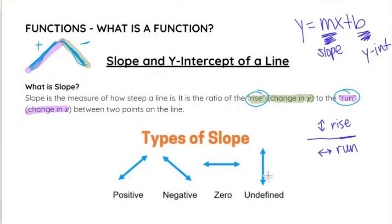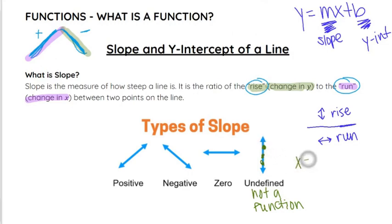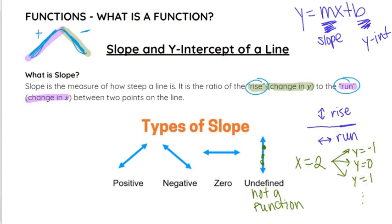And then finally, undefined slope — this is actually not a function. It is a straight vertical line, but it is not actually a function because every single point on this line has the same x value, and that same x value is mapped to a whole bunch of different y values, such as negative 1, 0, 1, and so on. So undefined is the slope of any vertical line.